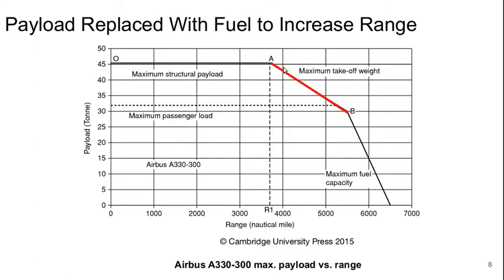Then we hit the second segment of the curve. Here we're essentially trading off fuel for payload to be able to increase range. If we want to fly farther, we have to decrease how much payload we are carrying, which allows us to carry more fuel in order to fly further. Somewhere along here we'll probably hit the maximum passenger load, which would be sort of the maximum distance you could fly the aircraft in a typical passenger-dominated commercial application. But that probably happens before you hit the limit of this segment of the curve.